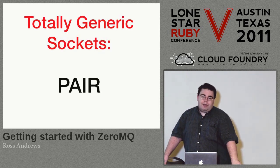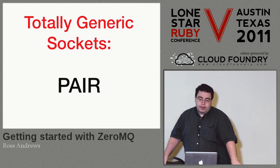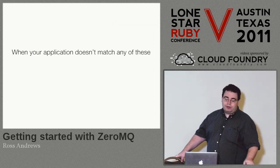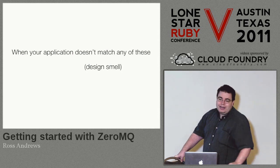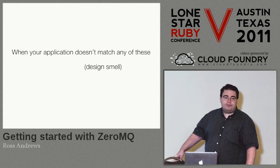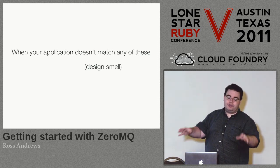Finally, there's the pair socket. The pair socket has no restrictions or architecture at all — you can always send, you can always receive. It is just like TCP. It's for when your application doesn't easily match any of the other patterns. The problem is that's kind of a design smell — if your application doesn't match any of those patterns, you may want to rethink your application, because those three are pretty common and pretty universal design patterns for clusters of applications working together.